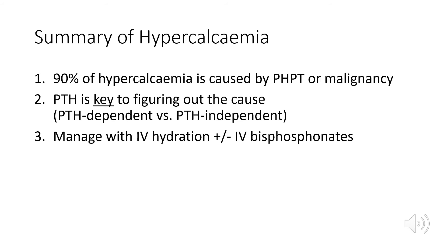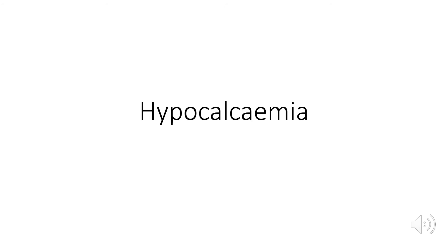Three key takeaways for hypercalcemia: First, the majority of cases are due to primary hyperparathyroidism or malignancy — look for these first. Second, parathyroid hormone is key to determining the cause — establish whether the hypercalcemia is PTH-dependent or PTH-independent. Third, the mainstay of treatment is IV fluids, though you may also consider bisphosphonates, calcitonin, and steroids.